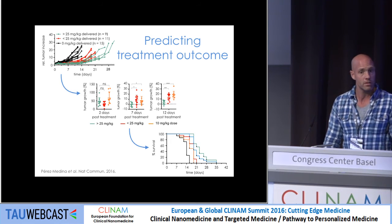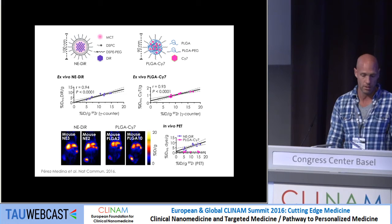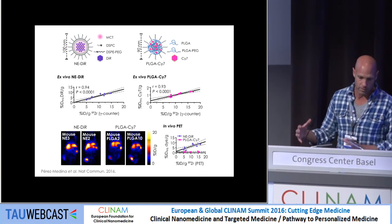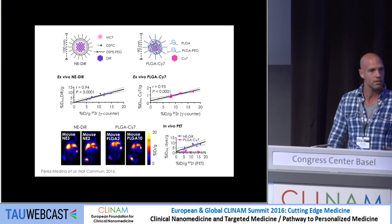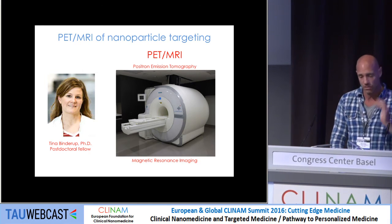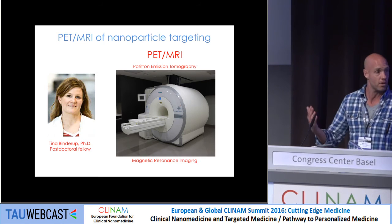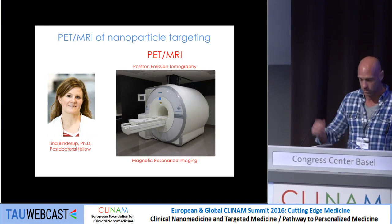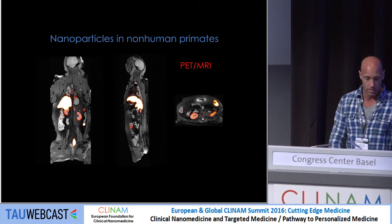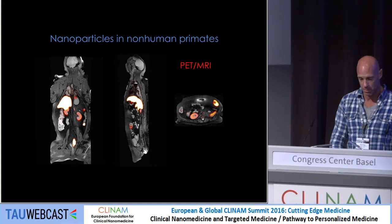This liposomal-based nanoreporter also works for other long-circulating nanoparticles — nano-emulsions and PEG-PLGA — with very nice correlation in each case. We've also invested heavily in translating this radio-labeling technology to large animal models. We have a unique opportunity at Mount Sinai to work with an integrated PET-MRI system. We've done this on non-human primates — monkeys — getting anatomical information from MRI and nanoparticle biodistribution from PET, producing really beautiful images.